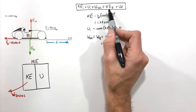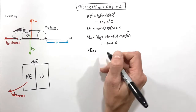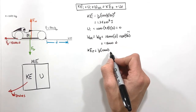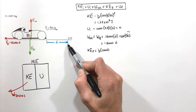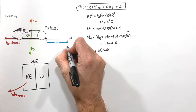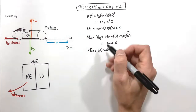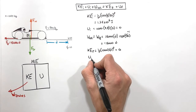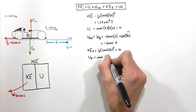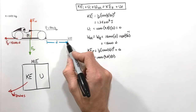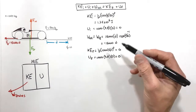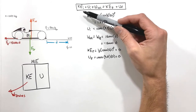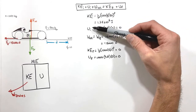On the other side of the equal sign, the final kinetic energy is one-half times 1,000 kg times the final velocity. Since we're solving for the stopping distance, the final velocity is zero, so the final kinetic energy is zero. The final potential energy is 1,000 × 9.8 × 0 = 0, because the car finishes on the ground. We've now determined all five variables in the work-energy theorem.